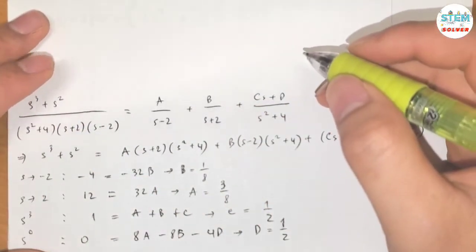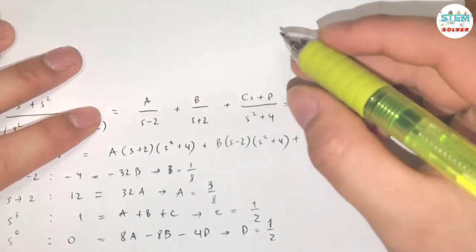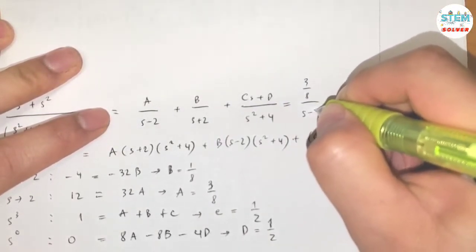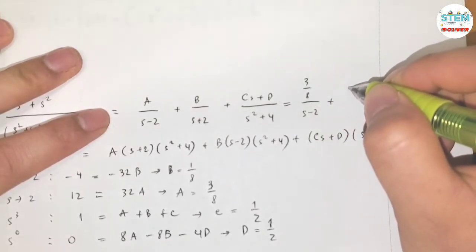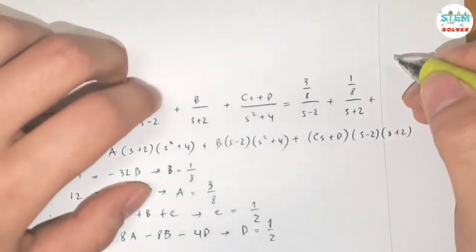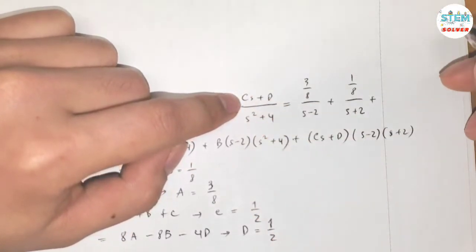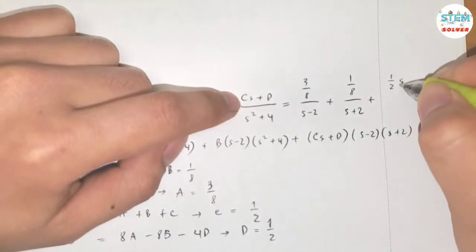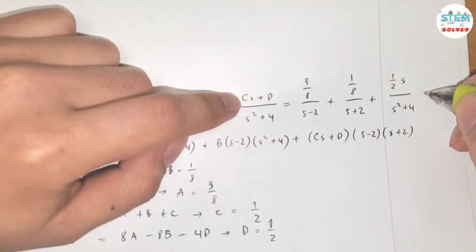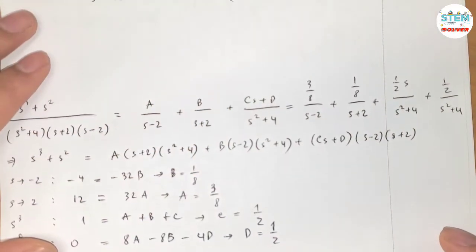Let me do an additional step right here. So A is 3 eighths over S minus 2 plus B is 1 eighth over S plus 2 plus C. Let's split this out into 2 fractions. So I have 1 half S over S squared plus 4 plus 1 half over S squared plus 4.